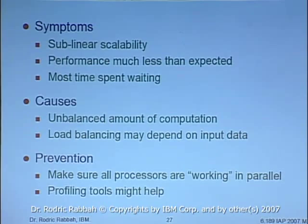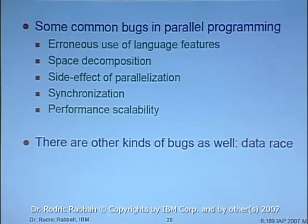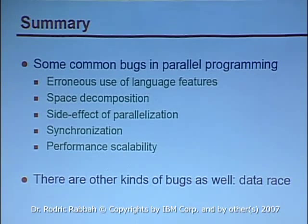In summary, there are many different bugs you might encounter. Key ones to look out for: erroneous use of language features — understand only a few basic concepts; space decomposition side effects from parallelization — don't ignore sequential code; and performance scalability. There are also other kinds of bugs, like data races, where concurrent threads try to update the same memory location and results depend on write/read ordering.